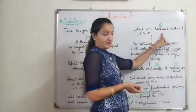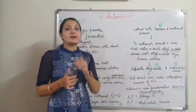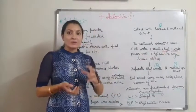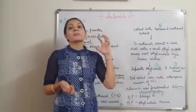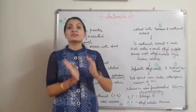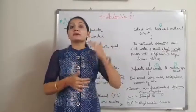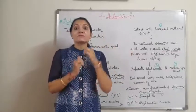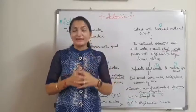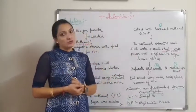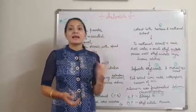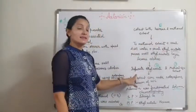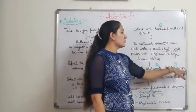We take the methanol extract in a separating funnel and add water and 50 ml of ethyl acetate. After shaking, two layers separate: one methanolic-water layer and one ethyl acetate layer. This procedure is repeated until the ethyl acetate solution becomes colorless. We then separate both extracts. So in total we obtain three extracts: hexane extract, ethyl acetate extract, and methanol-water extract.